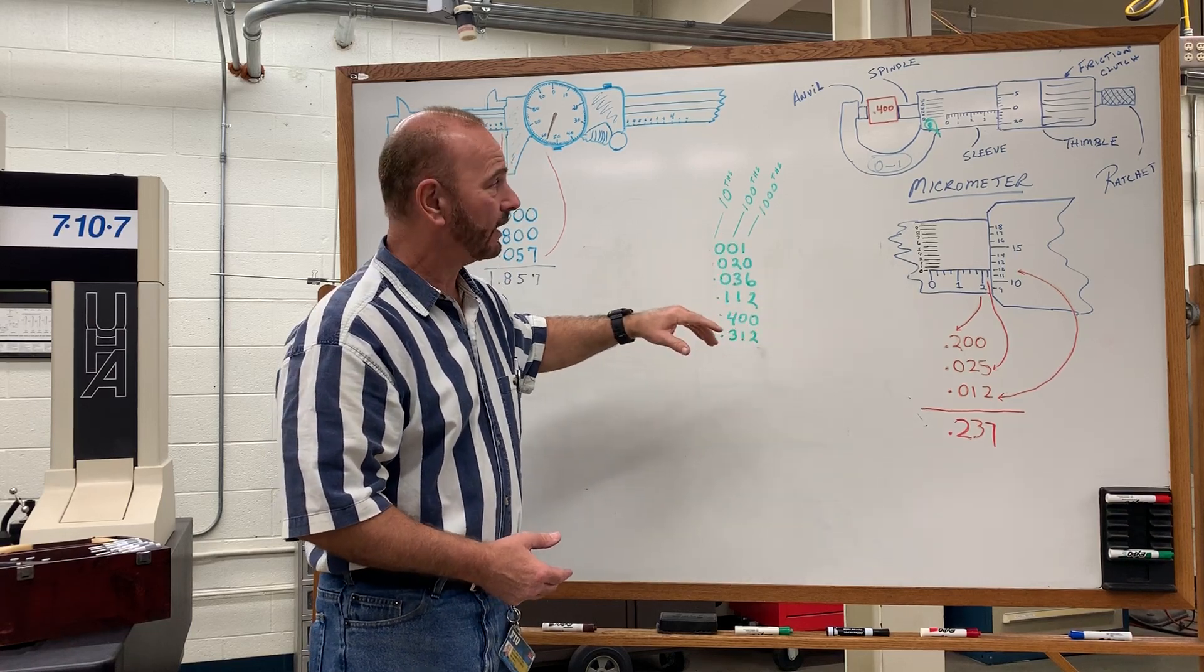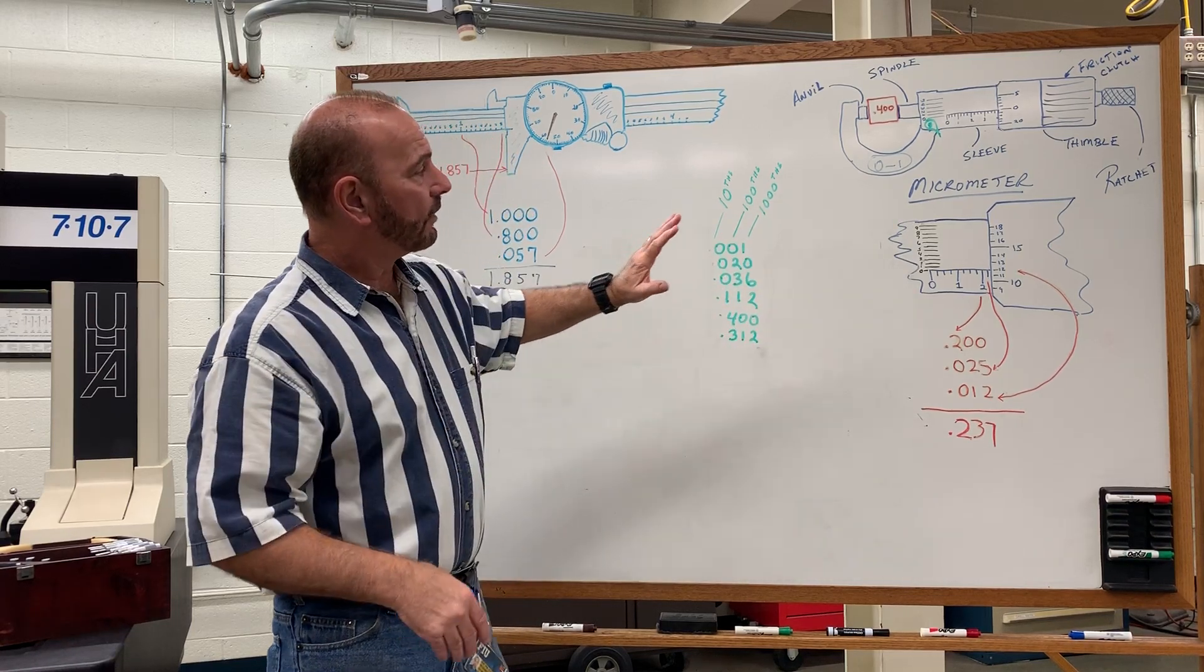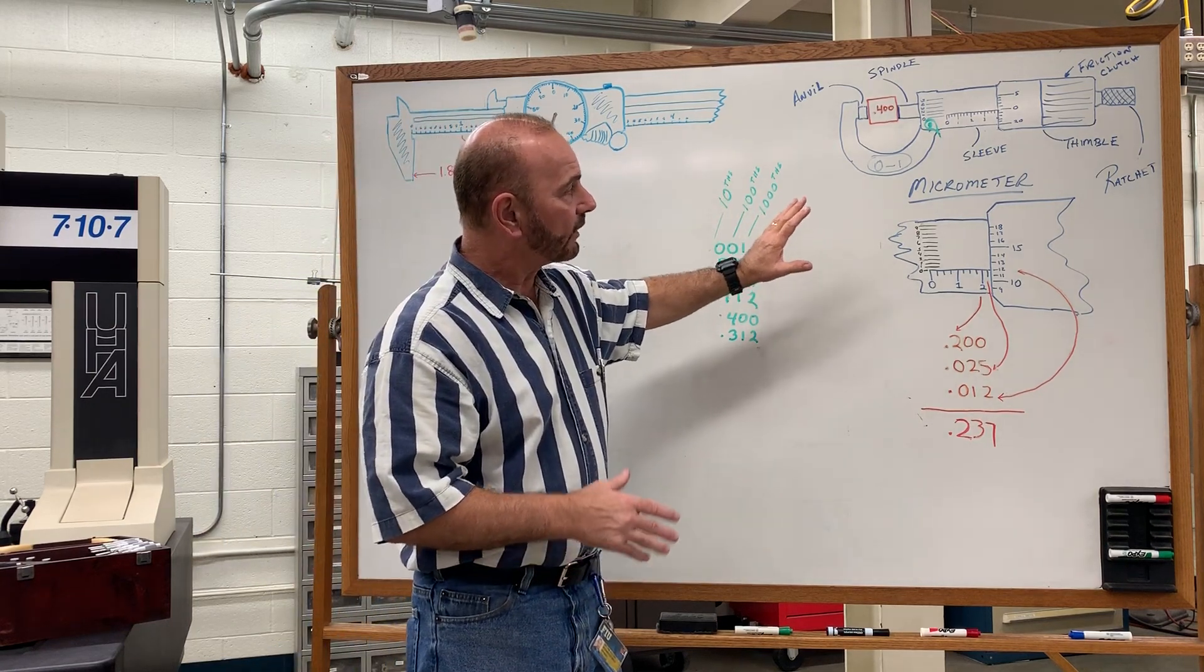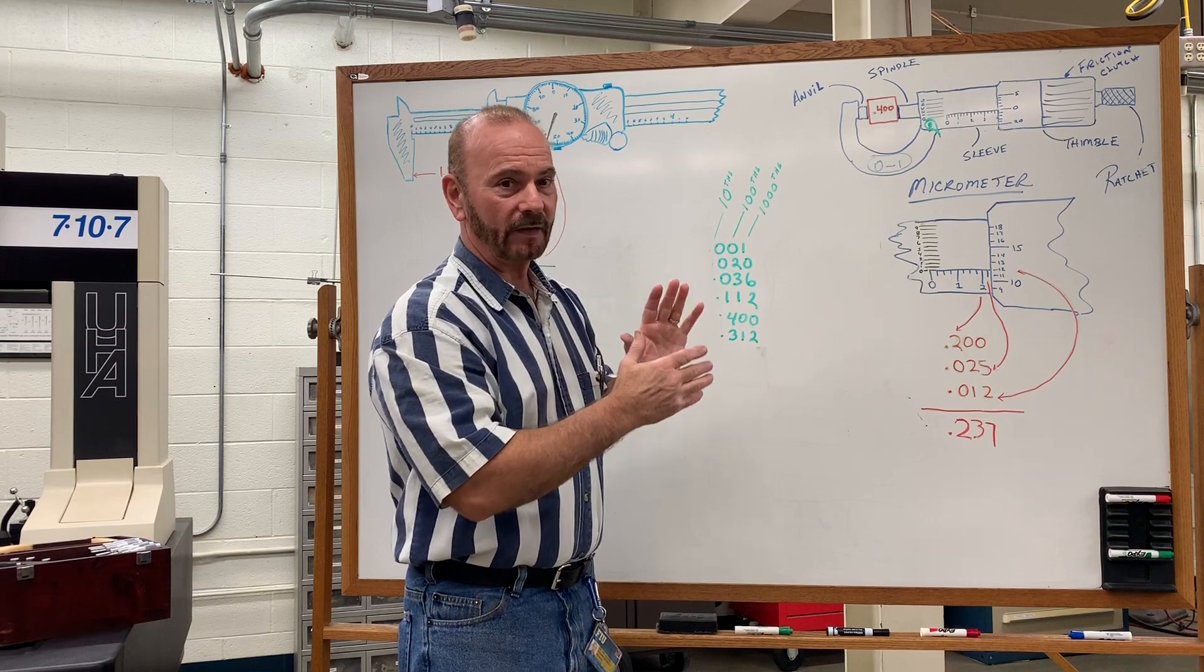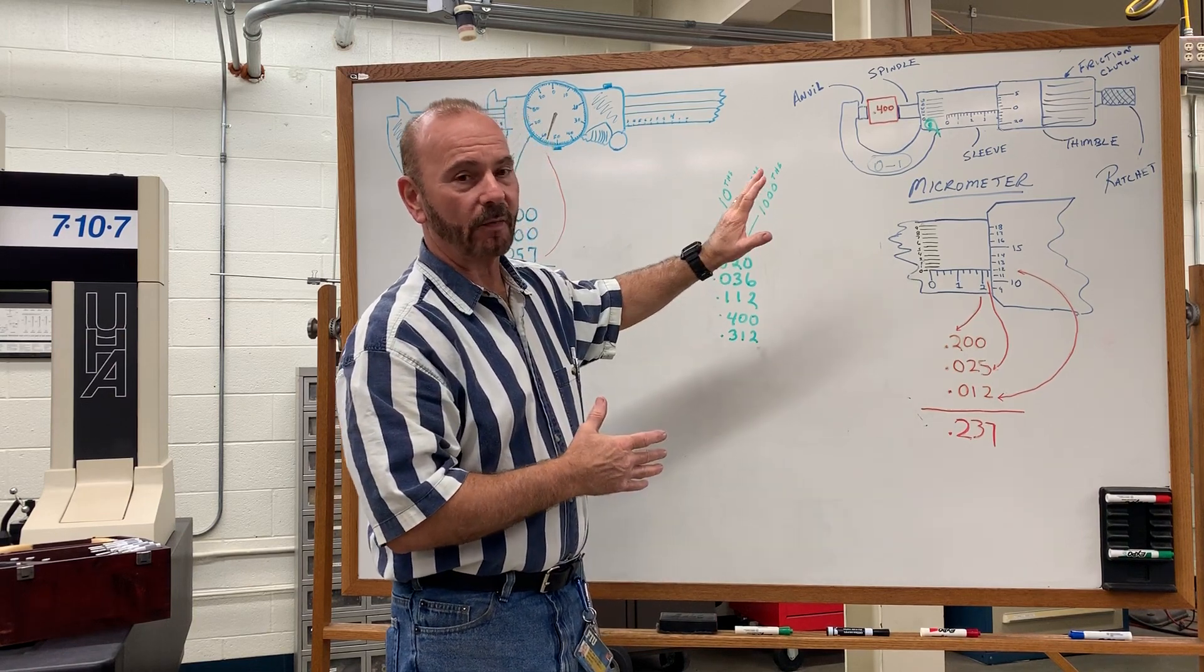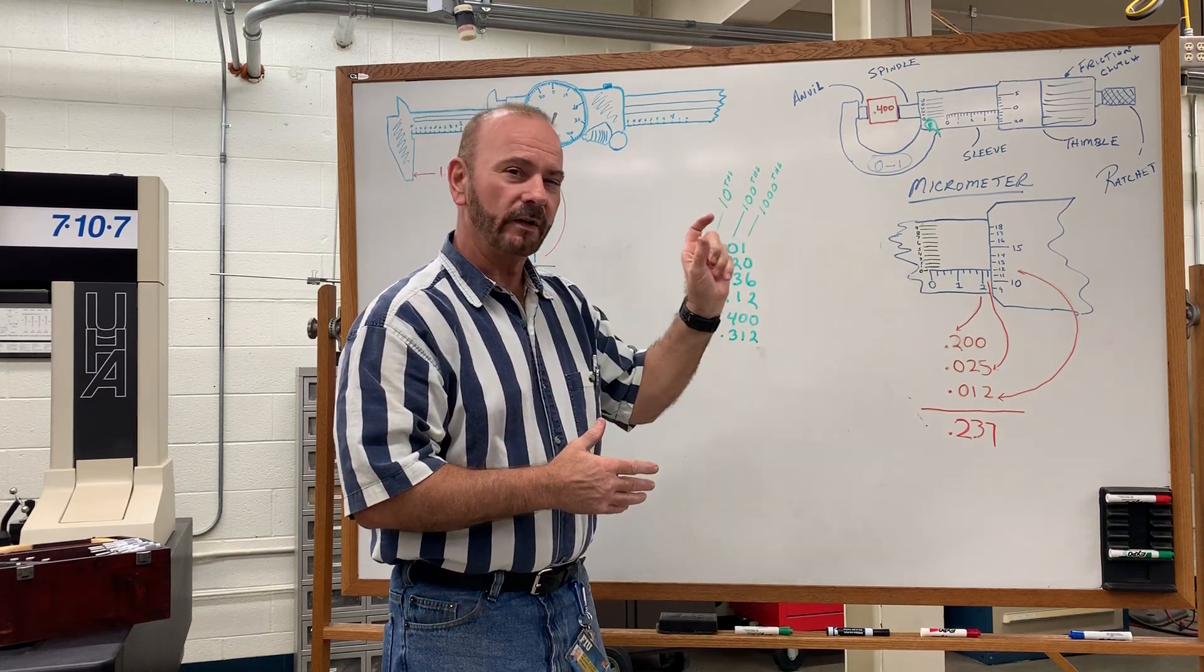Now micrometers, being more accurate, reading them is fairly simple. But micrometers come in a range, meaning that all micrometers, the inch micrometers that we're using, come in one inch increments.